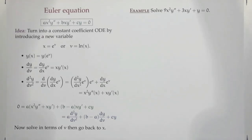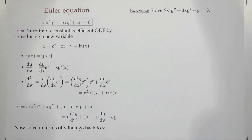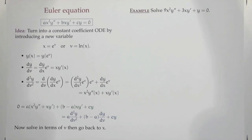Where we're at is we're learning about higher order differential equations. The only type we have real success with is the one we talked about at the end of last time — we're going to spend a lot of time on it, especially later this week. That's where we have constant coefficients: a linear, constant coefficient, ideally homogeneous differential equation. We have a shot. That's what we're going to get good at.